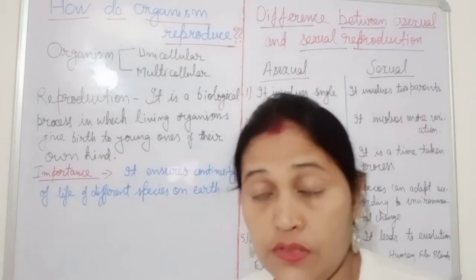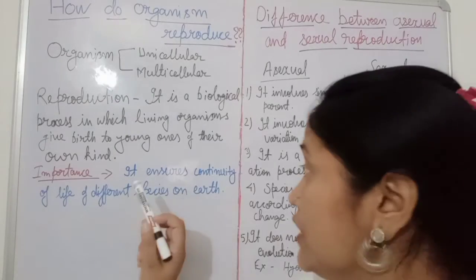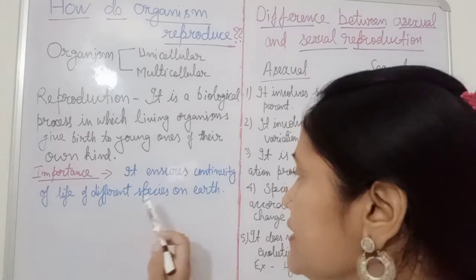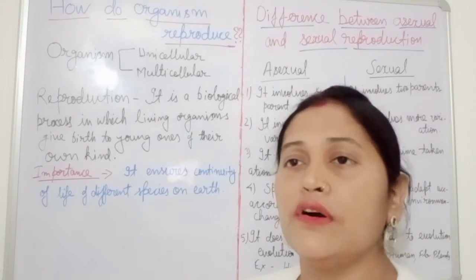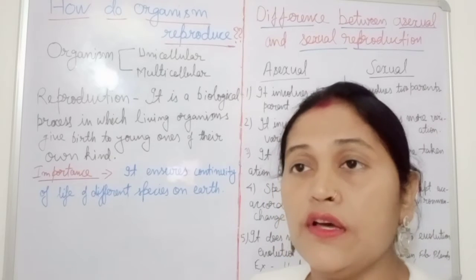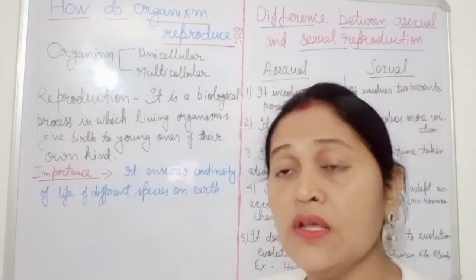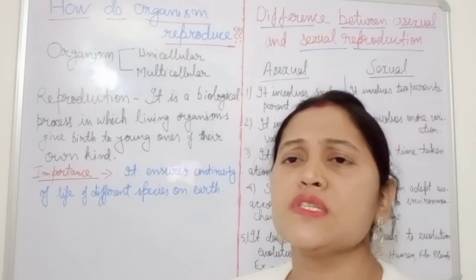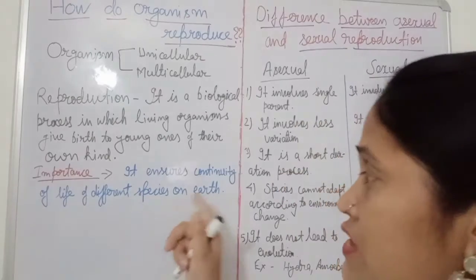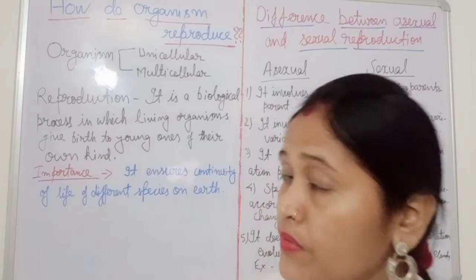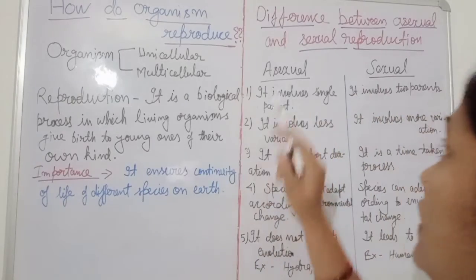Why is reproduction important? The significance of reproduction is that it ensures continuity of life of different species on Earth. Through reproduction we can maintain different species. If reproduction stops, species will one by one vanish from this Earth. So to maintain the balance of different species, reproduction is a very important event.